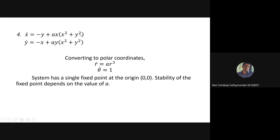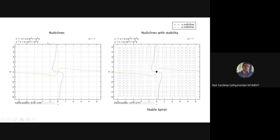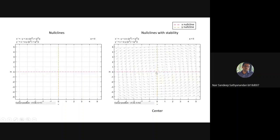There is also an example with polar coordinates, where x² + y² = r². We can equate and solve the equation. The nullclines look like this, and when a = 0 it is a center — trajectories circle around and from whichever starting point you begin, the arrows will circle with the same radius.